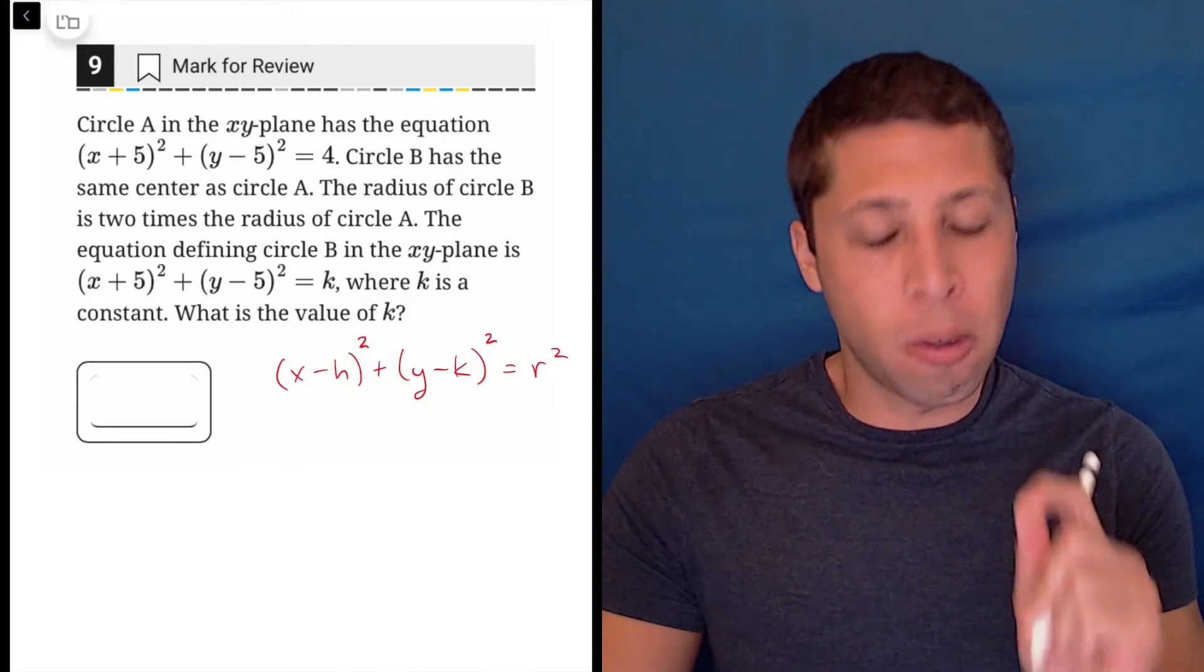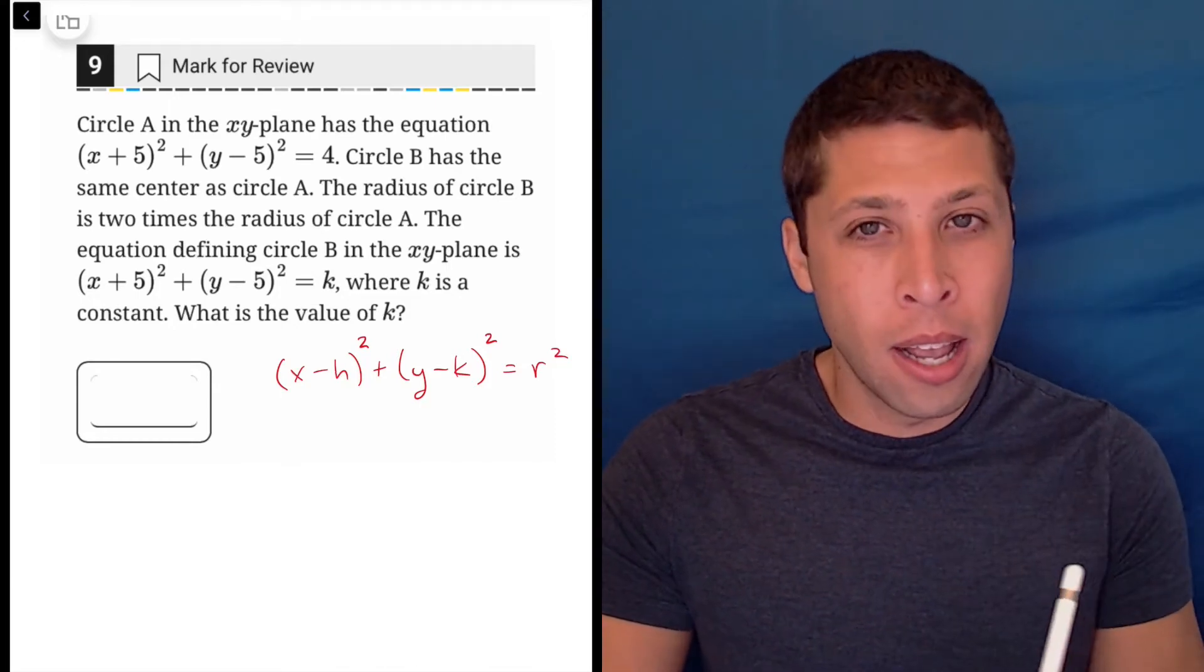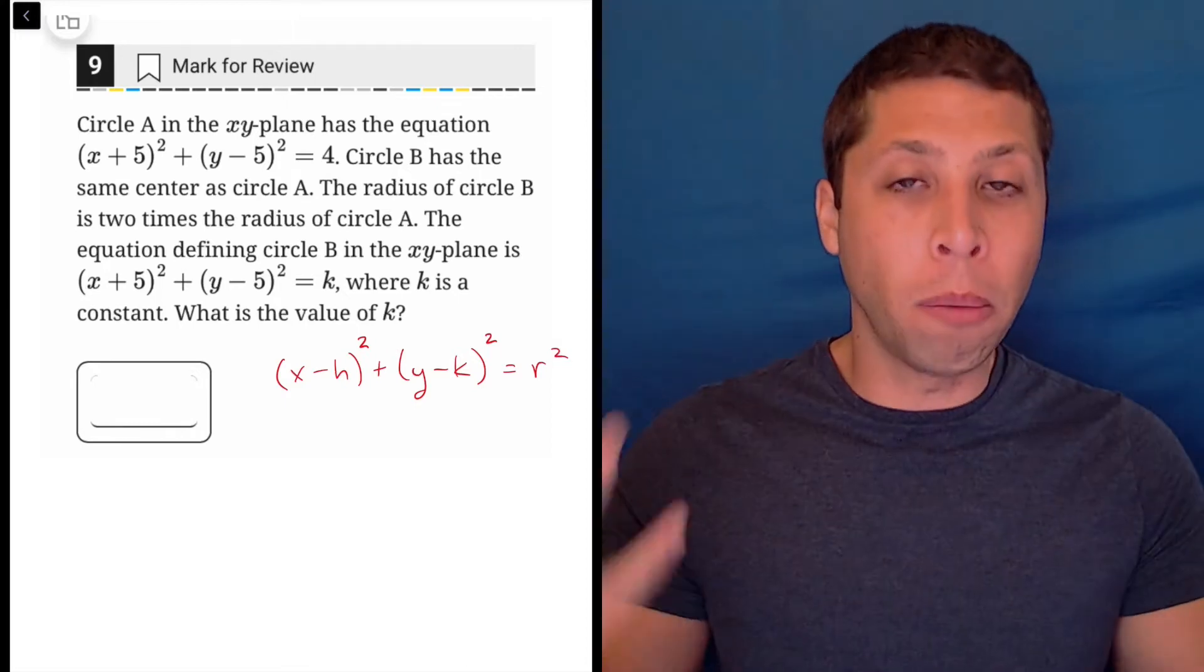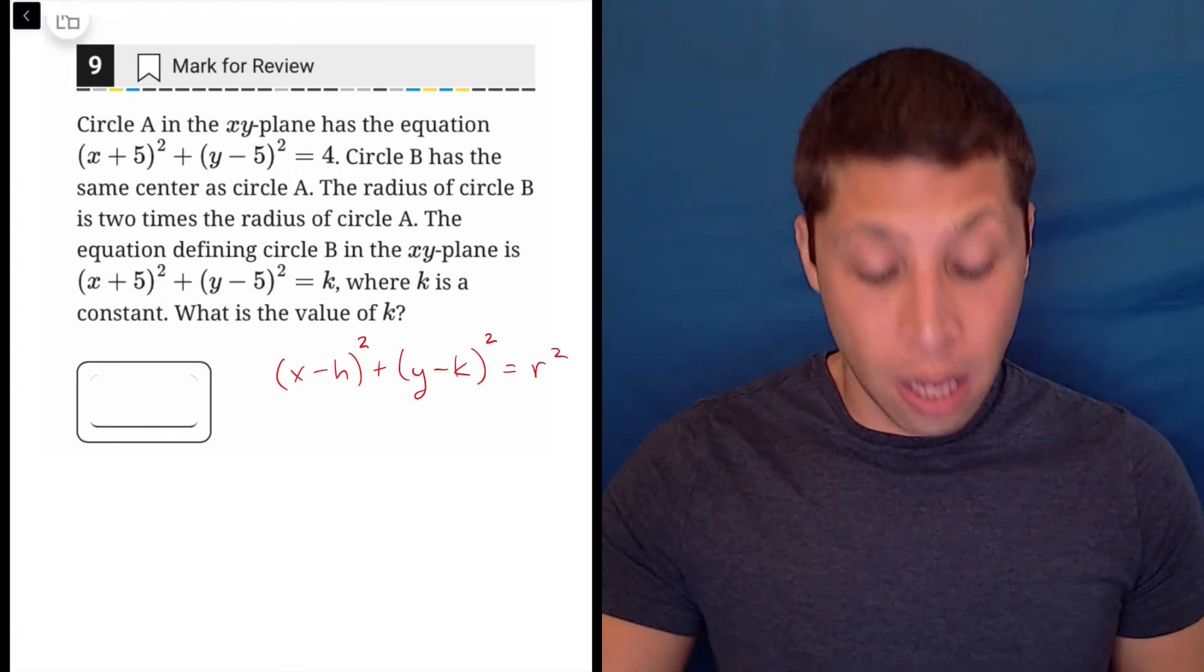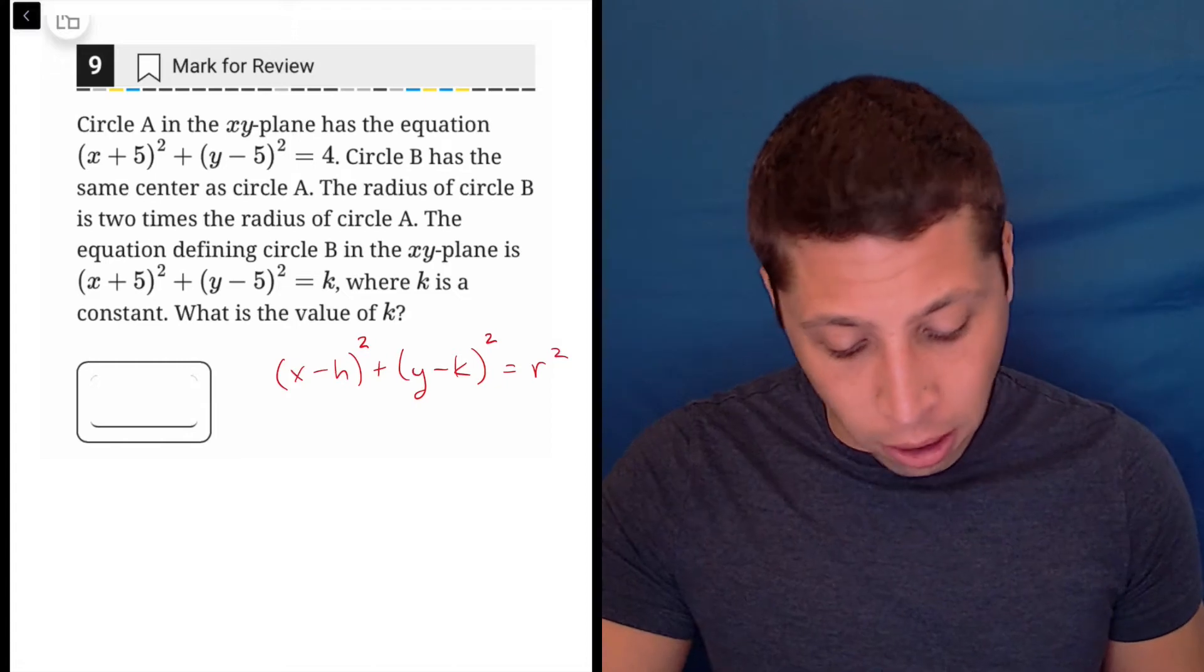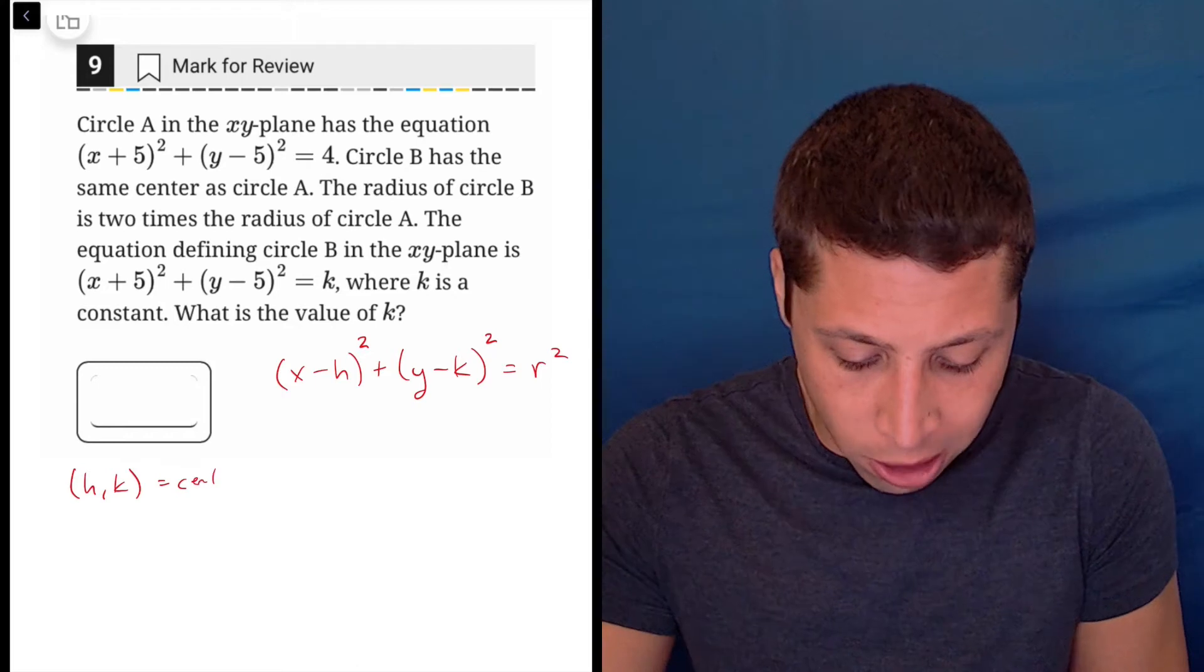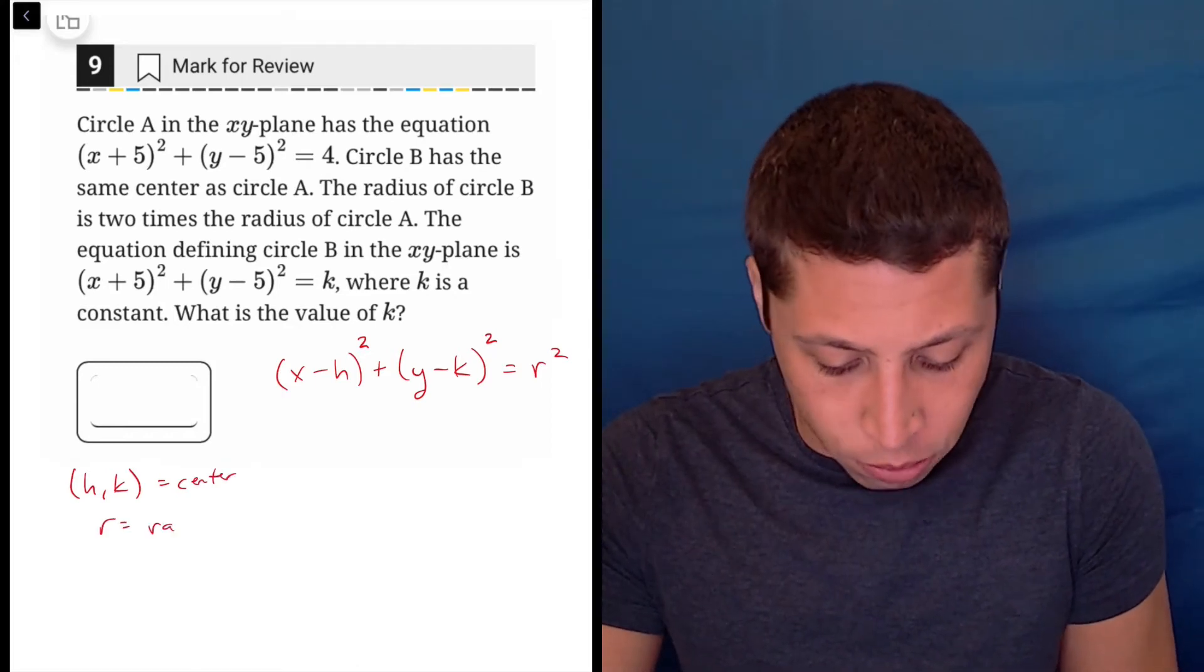I know it's a little confusing because they're using k as well, they're just kind of using it as a random letter. When we use it in the normal generic version of a circle, we're referring to the center as hk. Let's put this down here: hk is the center and r is the radius.